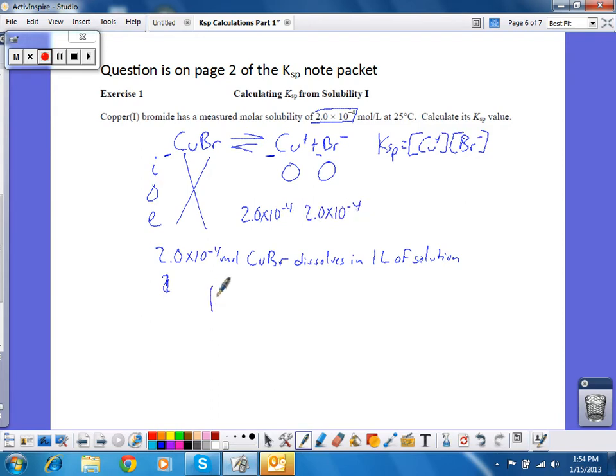So, if I want to calculate the Ksp, I simply take those two concentrations and plug them into the expression. And I get a Ksp value of 4.0 times 10 to the negative eighth. So, that would be the Ksp for copper one bromide.